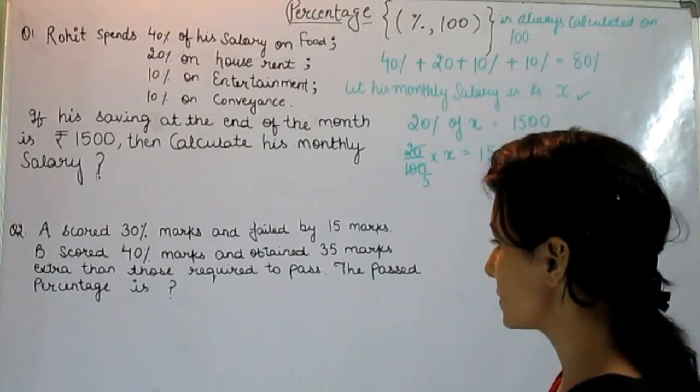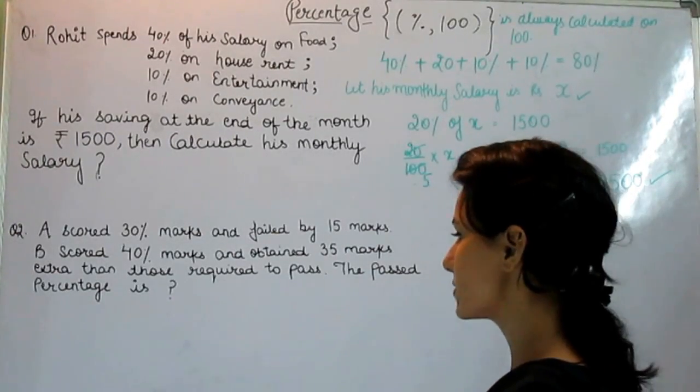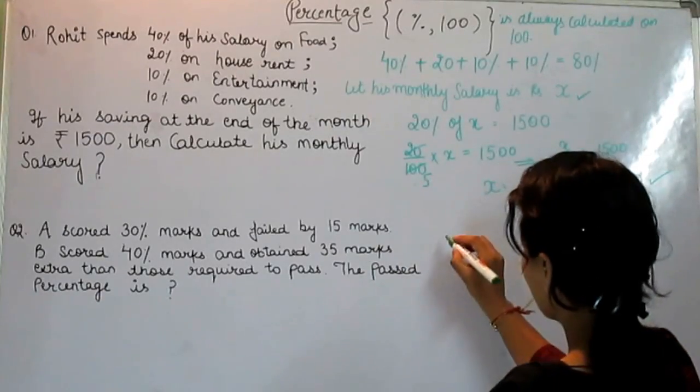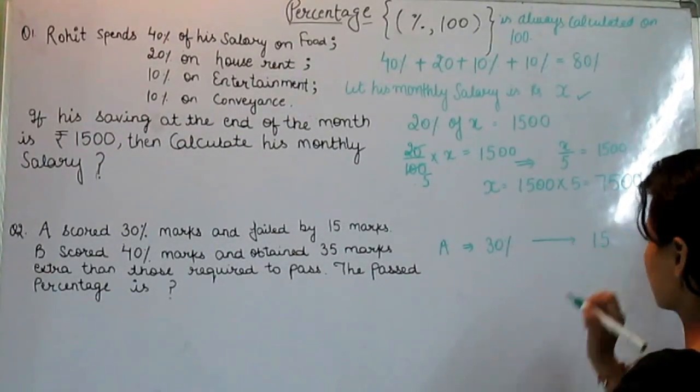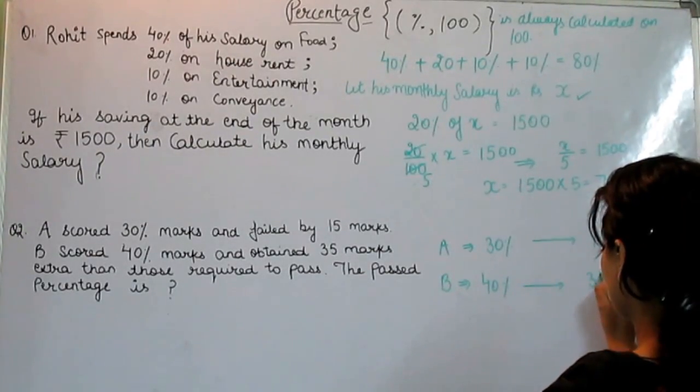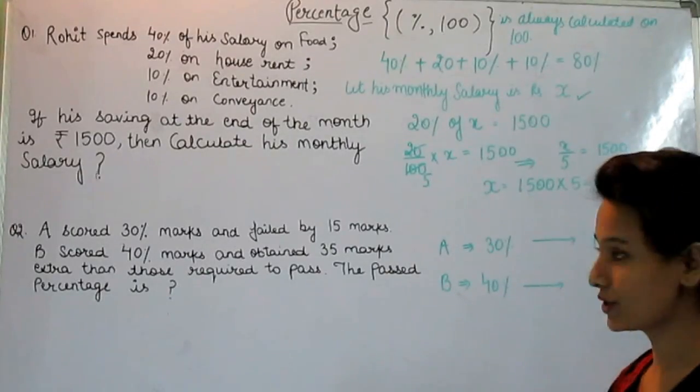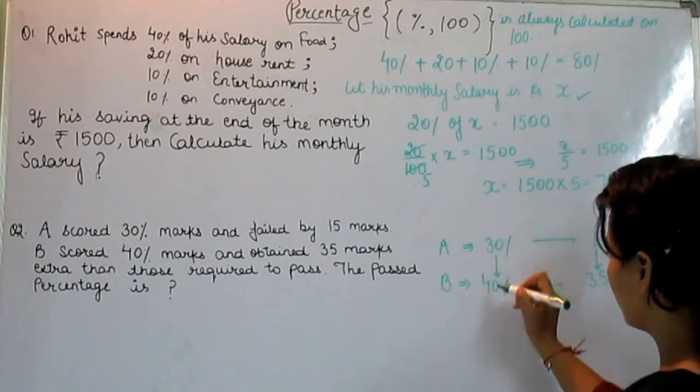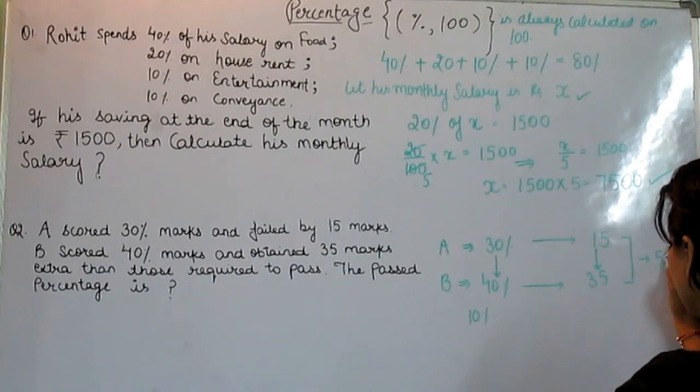Second question is A scored 30 percent marks and failed by 15 marks. B scored 40 percent marks and obtained 35 marks extra than those required to pass. The passed percentage is... A scored 30 percent marks and failed by 15 marks. So what is the trick to solve this type of question? We always subtract from this side and we always add from this side. If we subtract from this side, we get 10 percent and if we add this side, we get 50.